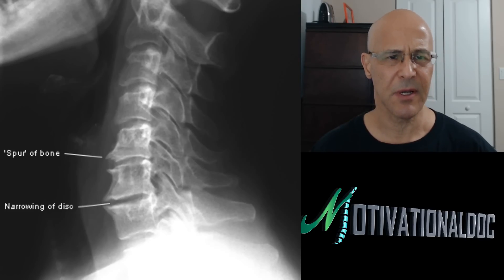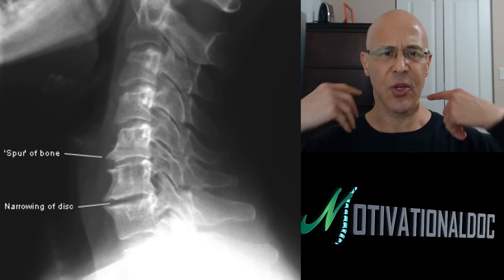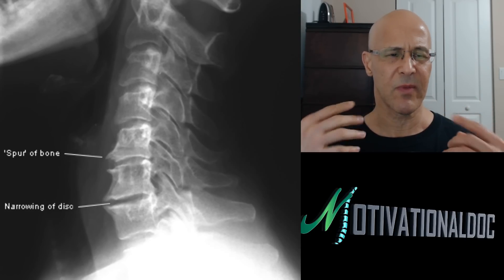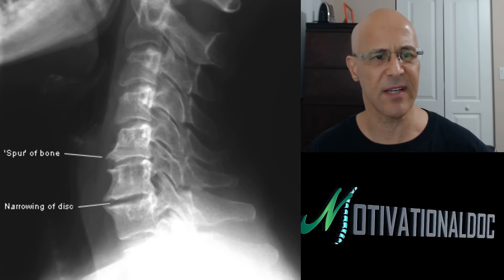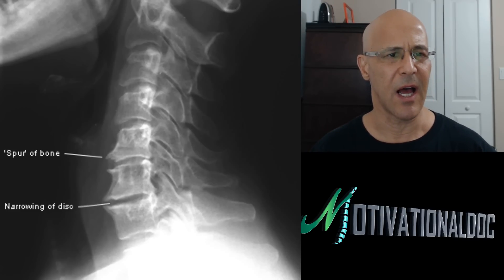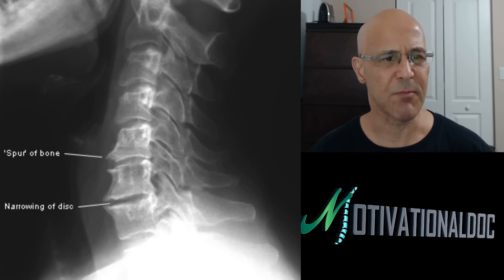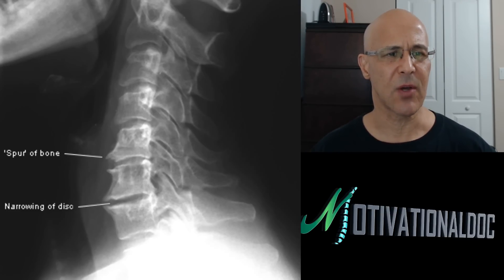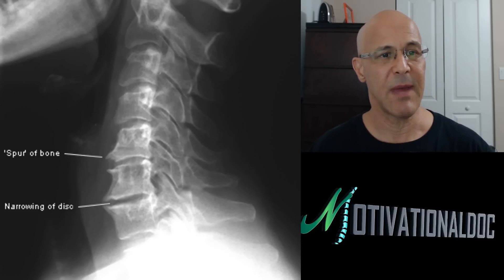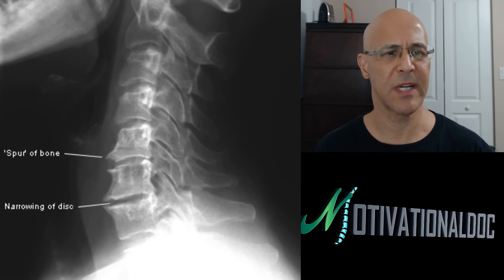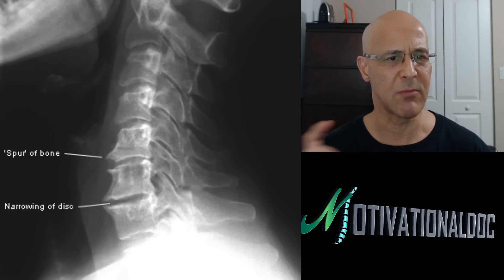Looking at this model: osteoarthritis, forward head posture — accumulation of stress on the joints causing degeneration, primarily at C5, C6, C7. See those little spurs in front of the bones? That's called osteophytes. The bones are getting closer together, meaning the discs are compressing — potentially a bulging or herniated disc, which an X-ray won't show but an MRI will be more conclusive.